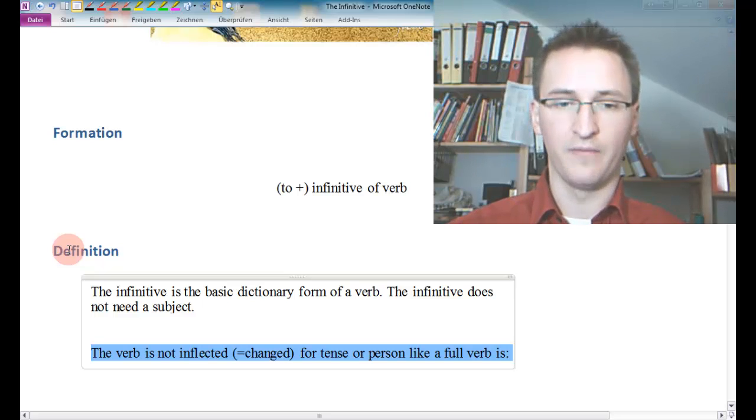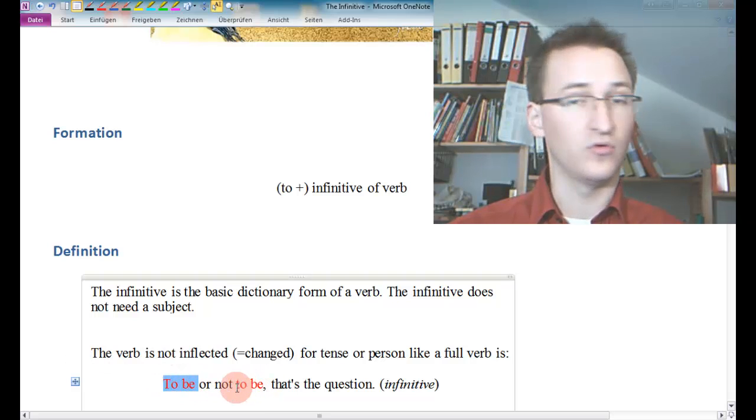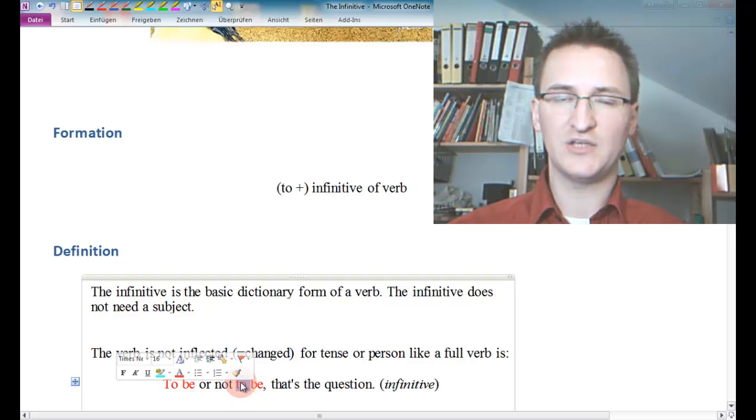So let's take a look at our sentence here: 'To be or not to be, that's the question.' So if we take a look at 'to be' here or this 'to be,' we do not get any information about the person who's speaking those lines or the tense that is involved.